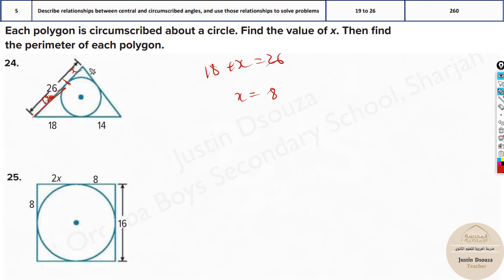And then what about the perimeter? Now we know this is 8, 8, 18, 18, 14, 14.